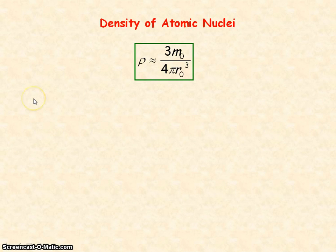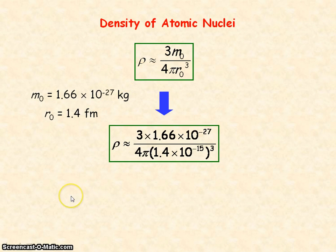So the mass of a nucleon inside a nucleus is approximately 1.66 times 10 to the minus 27 kilograms. And R0 is about 1.4 femtometres, femto being times 10 to the minus 15. So if we substitute these values into the equation, we get a density of the nucleus in the order of 10 to the 17 kilograms per metre cubed.